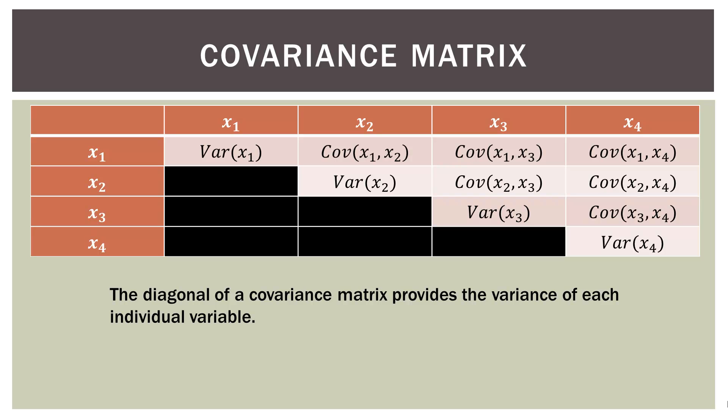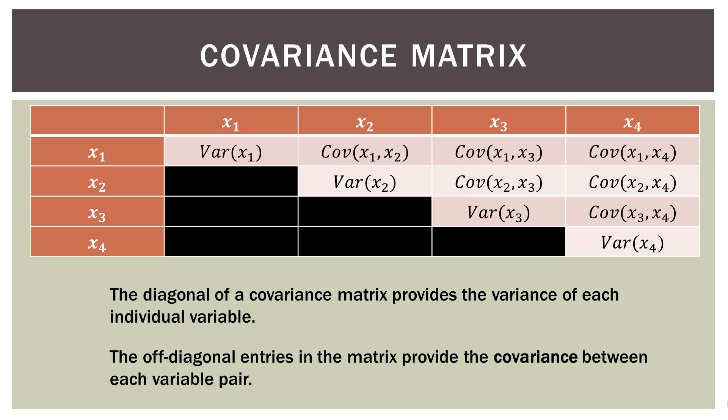As for the covariances, those are in the off-diagonal regions — variances along the diagonal, covariances in the other cells. You can see the intersection of x1 and x2 gives the covariance of x1 and x2, the intersection of x1 and x3 gives the covariance of x1 and x3, and so on. I've blacked out the other cells because they are just duplicates — the covariance of x1 and x2 is the same as the covariance of x2 and x1; it's just a duplicate.